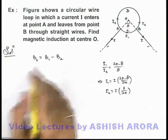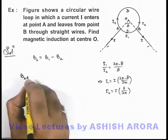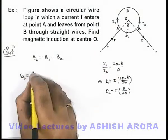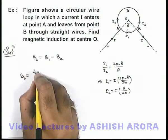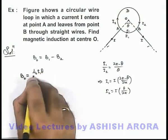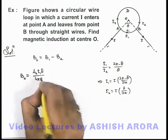If we use the results of these currents in the magnetic induction due to circular arcs these are given as μ₀ i1 θ by 4π r if r is the radius.